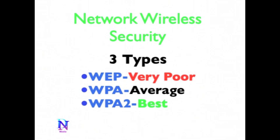There are three different types of wireless network security: WEP, which is very poor; WPA, which is average; and WPA2, which is the best.